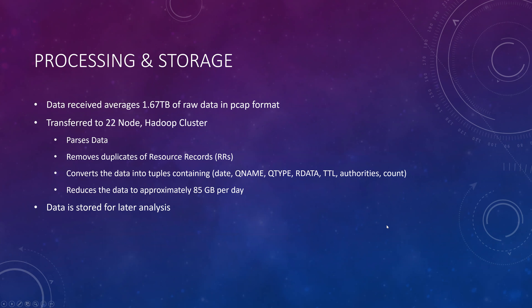The data received averages about 1.67 terabytes of raw data in PCAP format per day. It's transferred to the 22-node Hadoop cluster that parses the data, removes duplicate resource records, and converts the data into tuples containing date, queue name, queue type, data, time to live, authorities, and count. This reduces the data to approximately 85 gigabytes per day, which is then stored for later analysis.